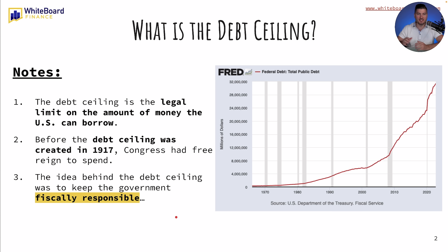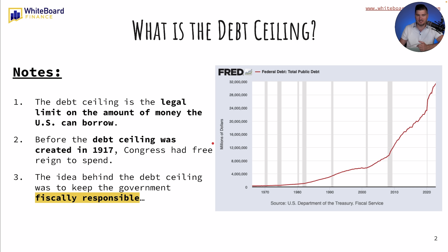So what is the debt ceiling? The debt ceiling is the legal limit on the amount of money the U.S. can borrow. If you look at this chart, this is from FRED — the U.S. Department of Treasury, Fiscal Service, basically the Federal Reserve's reporting. You can see here, since just before 1970, all the way to 2022 or 2023, these are in millions of dollars — so we're talking 4 million millions. You can see right around 2000, after the dot-com bubble, federal debt, total public debt, absolutely hockey-sticked and skyrocketed.